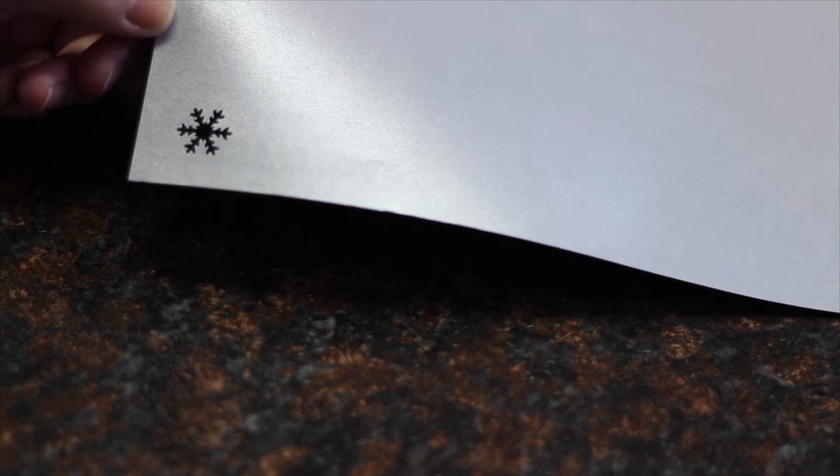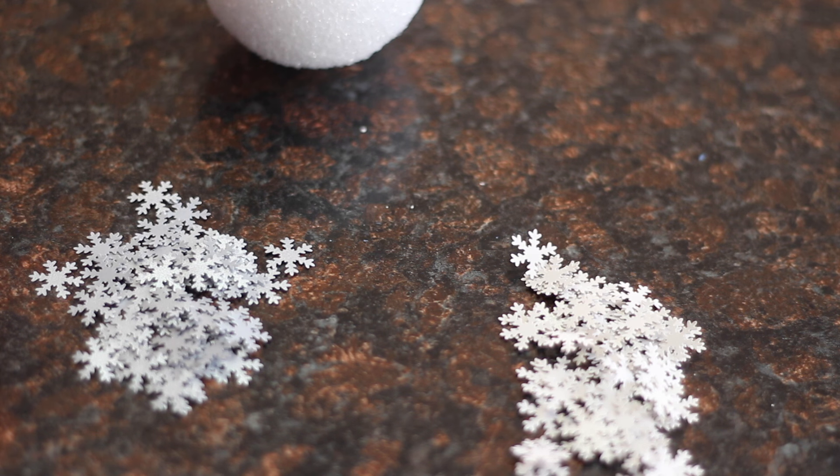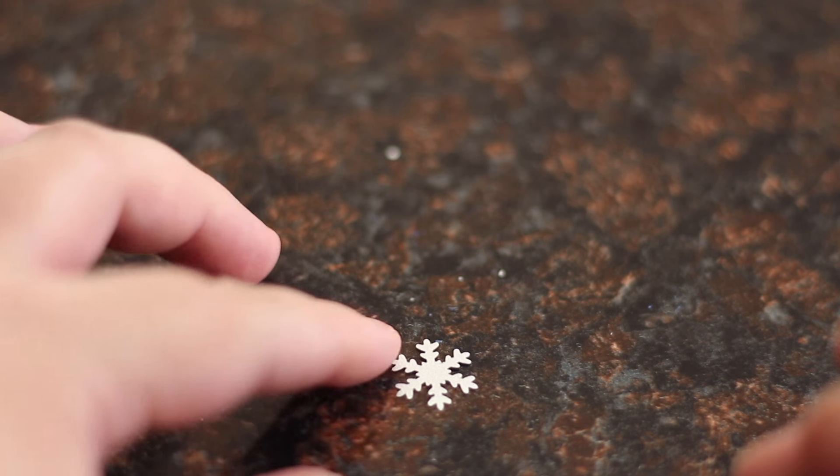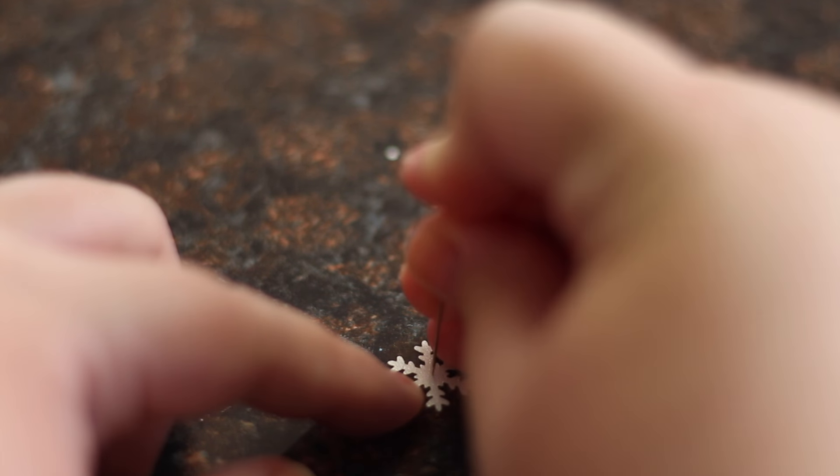Start by punching out a bunch of snowflakes with your paper punch. You'll need a lot if you're using a smaller sized punch. Once you have them punched out, you can take a pin and push it into the center of the snowflake to make a hole, but make sure you're doing this on a surface that you won't destroy. I did the rest of these on a magazine.